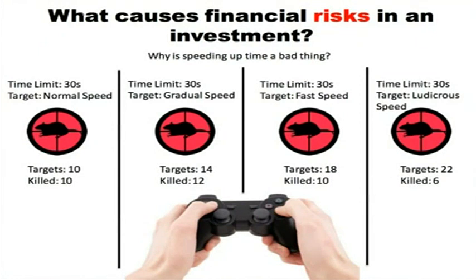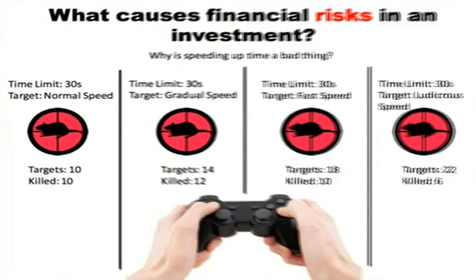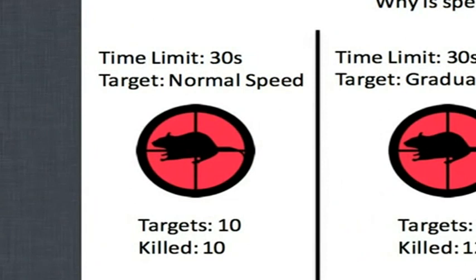Let's assume that we're playing a video game. You have 30 seconds to shoot a little rat that's running across the screen. On the far left, we're going to start off at a normal speed. In 30 seconds, 10 rats run across the screen. Since the rats are moving at a normal speed and you're good at the game, you can kill all 10 rats.